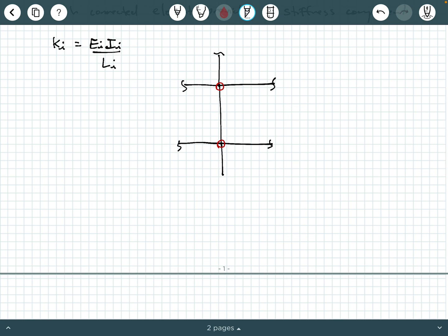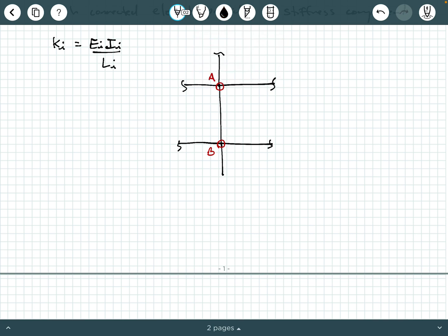So what we do is we calculate these G factors for each member end. So we calculate a GA. According to AISC, we calculate a GA. So we can call this point A, and then we have a GB down here. So we have two G factors, one for one member end and the other for the other member end.